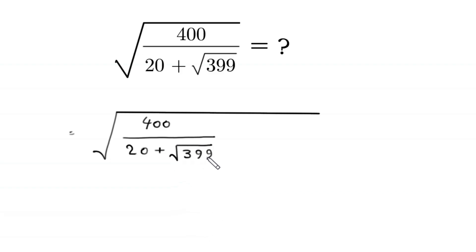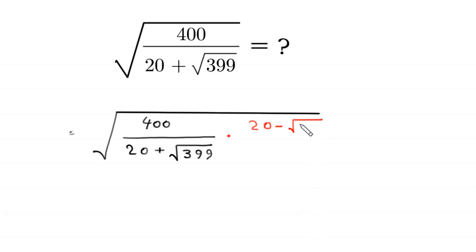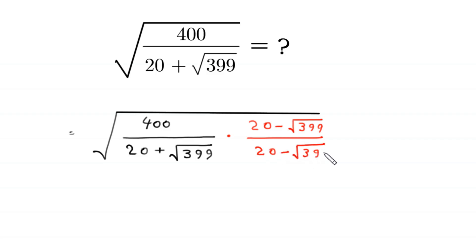To rationalize the denominator, we multiply and divide this expression by the conjugate of 20 plus root 399, which is 20 minus root 399 divided by 20 minus root 399.